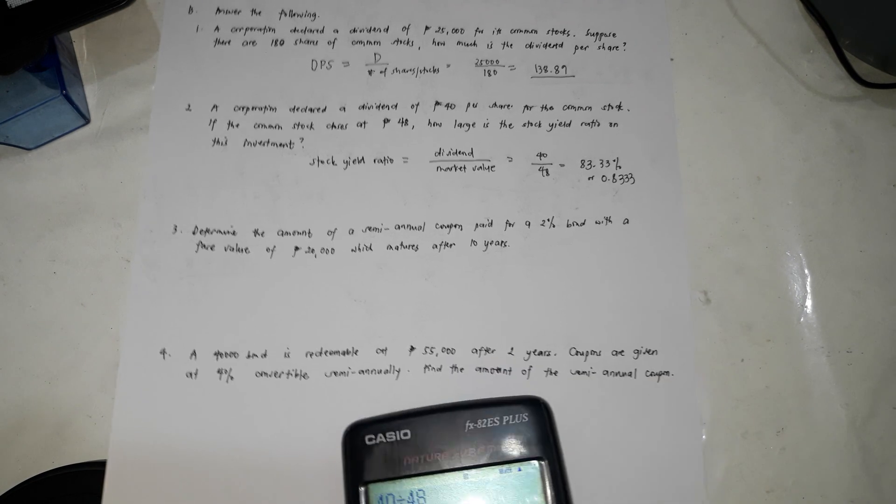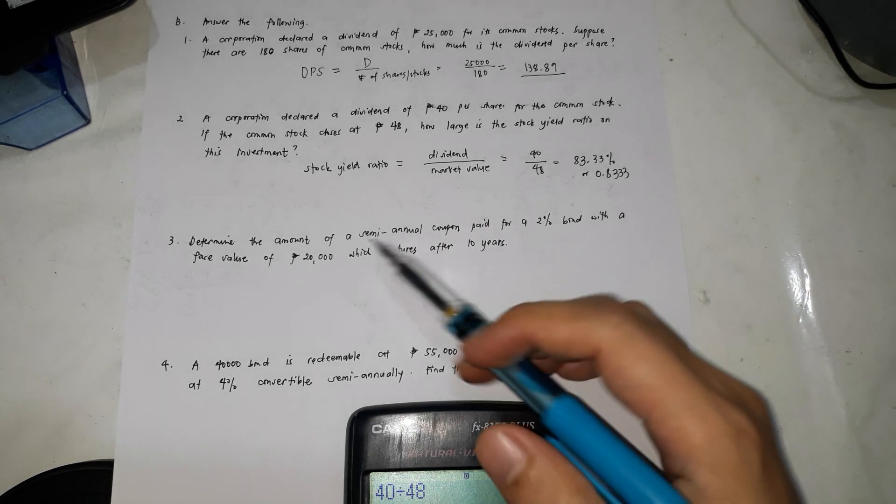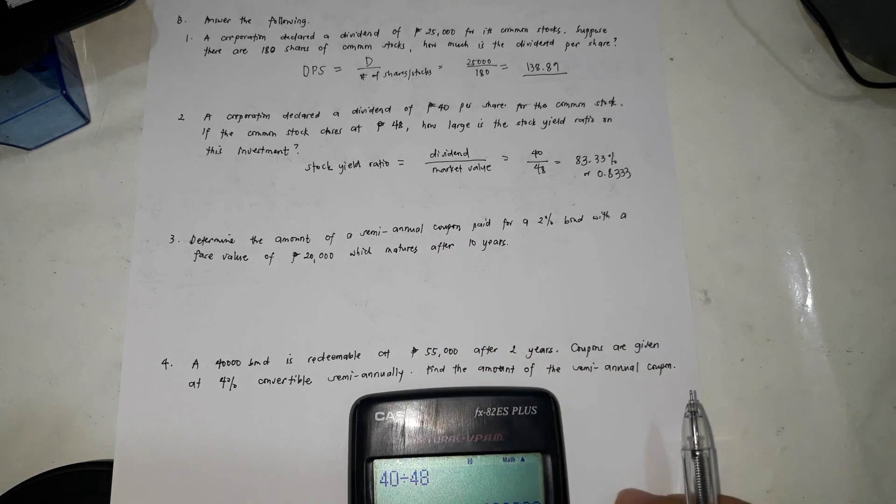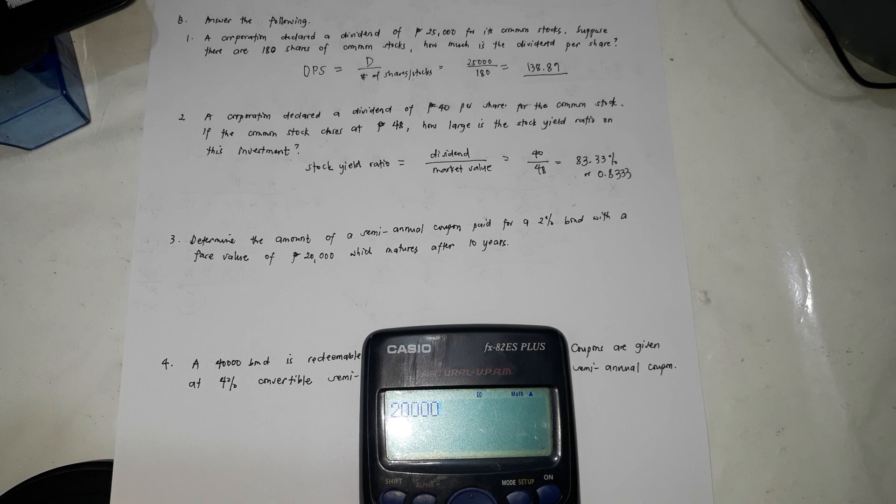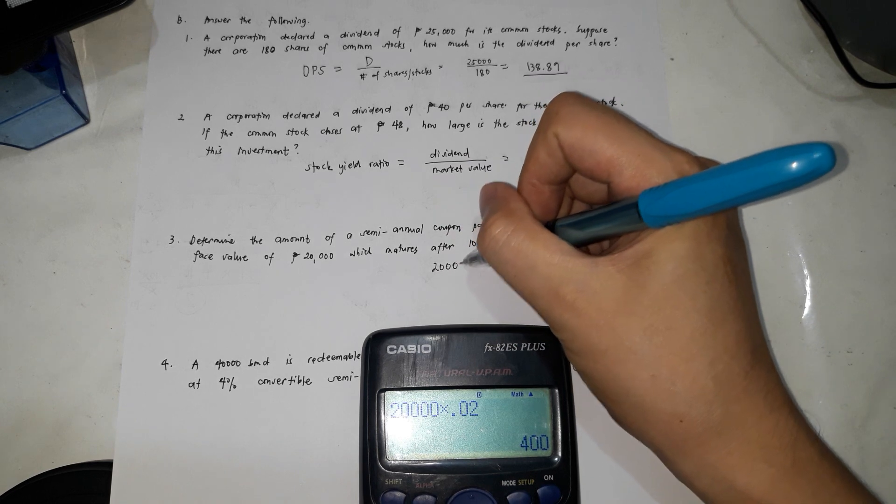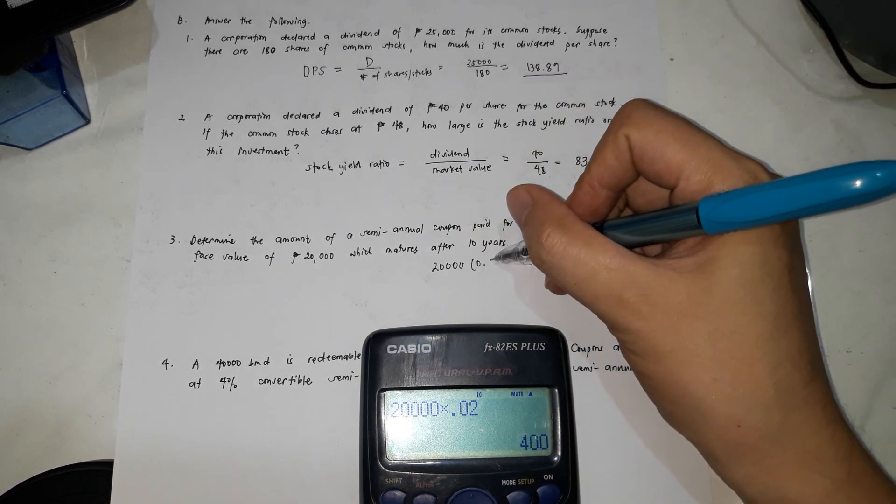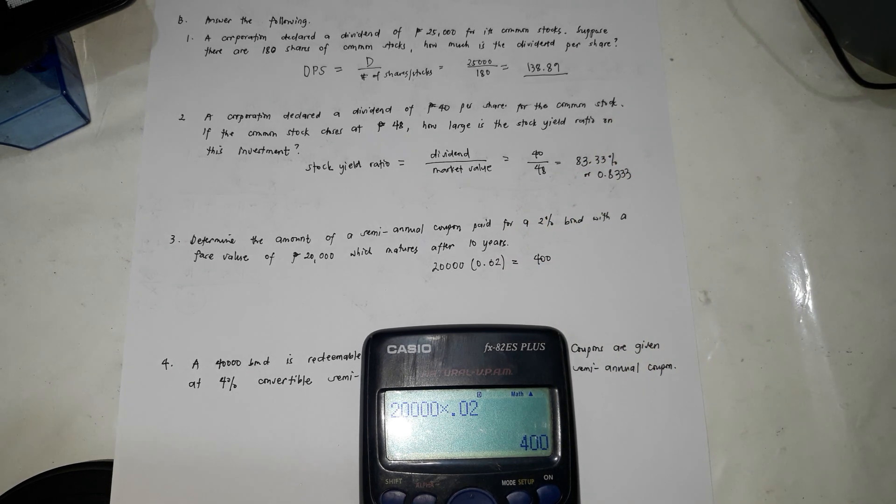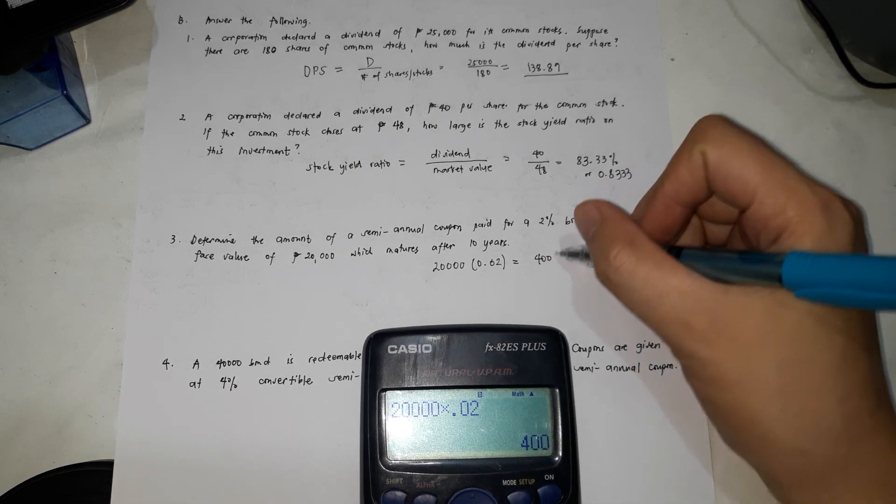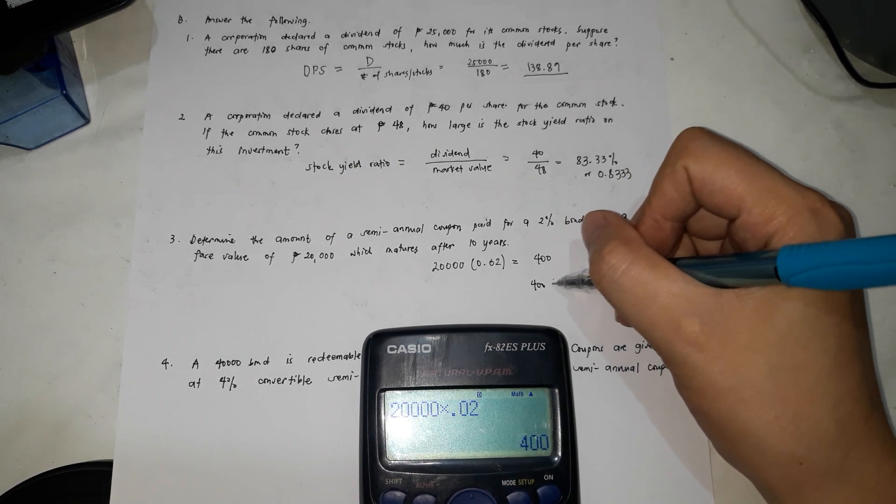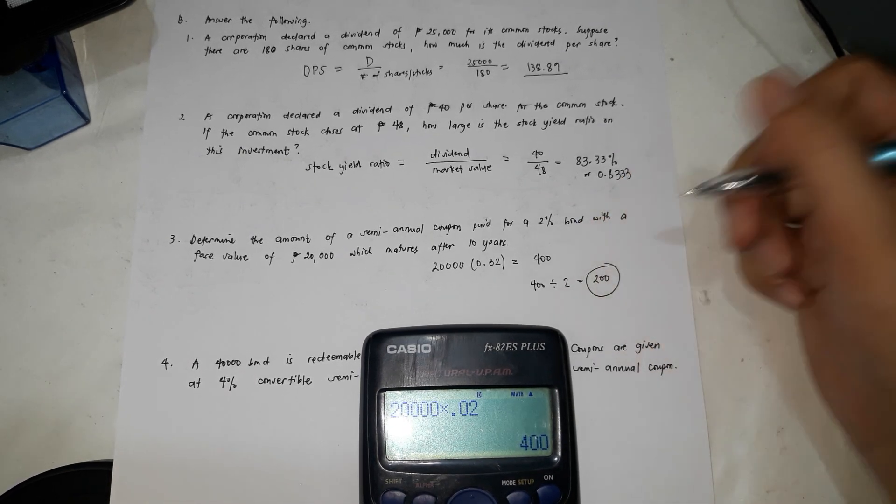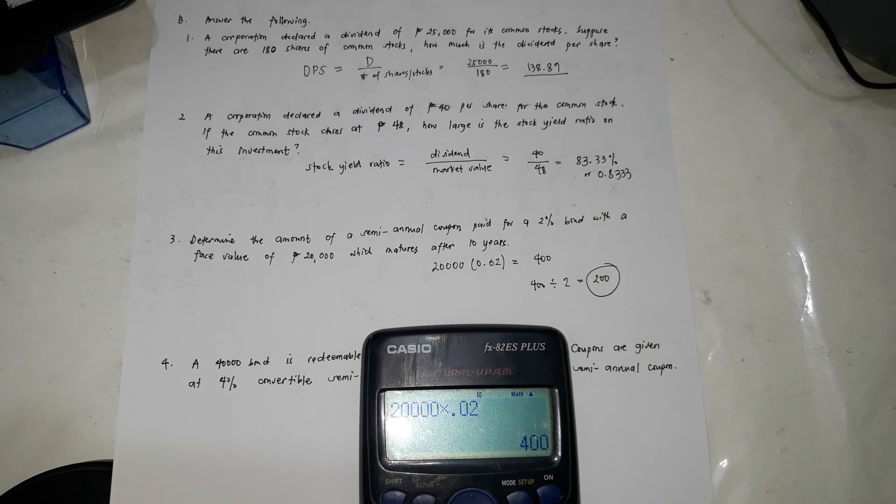So for this one, it's 2% and the face value is 20,000. So the face value, that's how much you're going to receive at the end. So 20,000, just multiply it by the percent, which is 0.02. So 20,000 multiplied by 0.02 is equal to 400. So that's the 400. This is annual. So you're going to divide 400 divided by 2, that's 200. So this is the semi-annual coupon that you're going to receive.